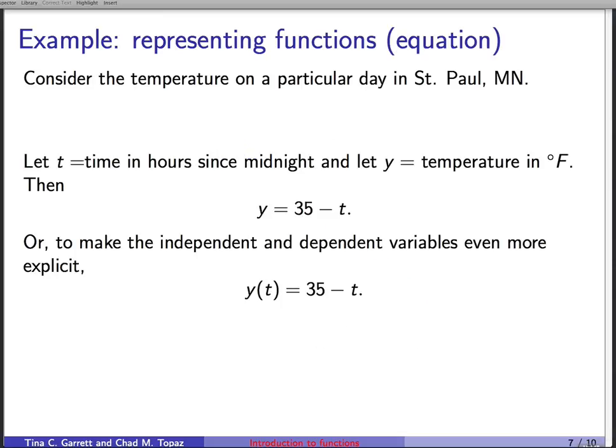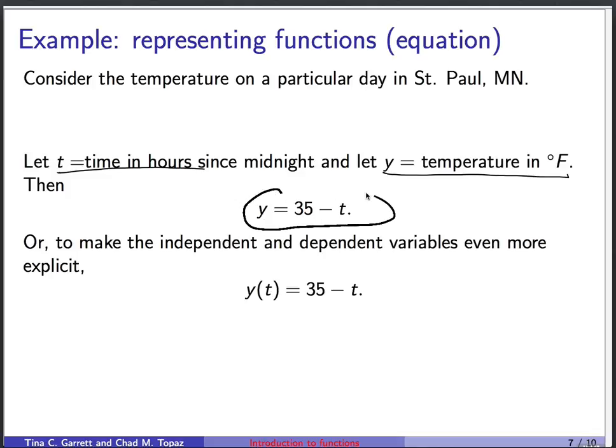And then, of course, we could try to write down a formula. We could let t, the variable t, represent time in hours since midnight. That's the independent variable. And we could let y, the temperature, represent the temperature in degrees Fahrenheit. That's the dependent variable. And the rule would then be y equals 35 minus t. And sometimes, to make it even more explicit what is an independent variable and what's the dependent variable, instead of writing y equals 35 minus t, we might write y of t equals 35 minus t, to emphasize that t is the input, it's the independent variable, and y depends on that.